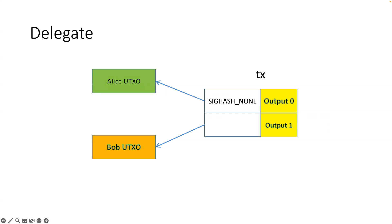You don't usually do that — it's very dangerous — but in some cases you want to use SIGHASH_NONE. Here's one example: Alice is a parent and Bob is her son. Alice wants to give Bob some allowance so he can buy books or whatever. This is a delegation scenario — Alice has some bitcoins but she wants to delegate the spending privilege to Bob. How would she do that?